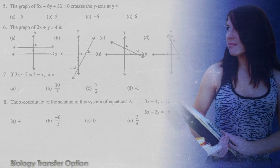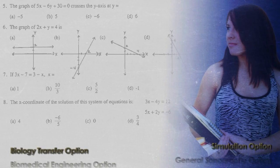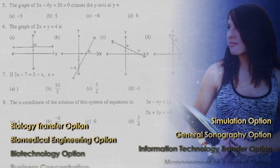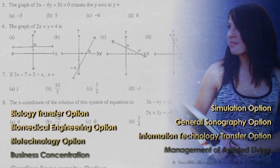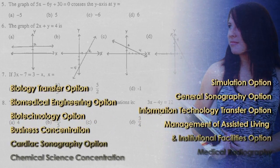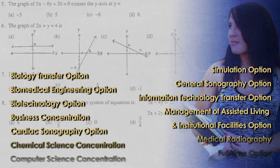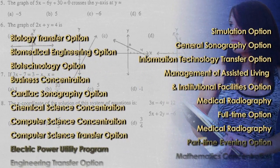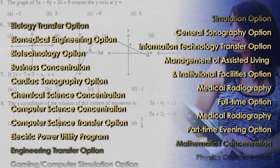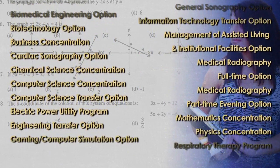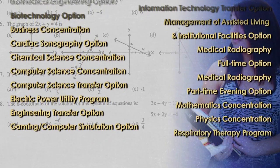The associate degree programs listed here require that you place out of or pass MAT099 Intermediate Algebra with a grade of C or higher before registering for MAT194 College Algebra for STEM.